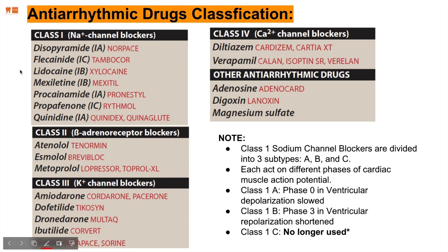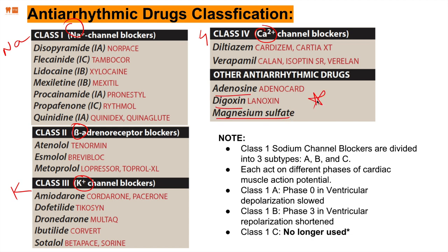Here are the drug groups of antiarrhythmic classification. Class 1 is sodium channel blockers, class 2 is beta blockers, class 3 is potassium channel blockers, class 4 is calcium channel blockers — remember NABKCA. Other antiarrhythmic drugs include adenosine, digoxin, and magnesium sulfate.